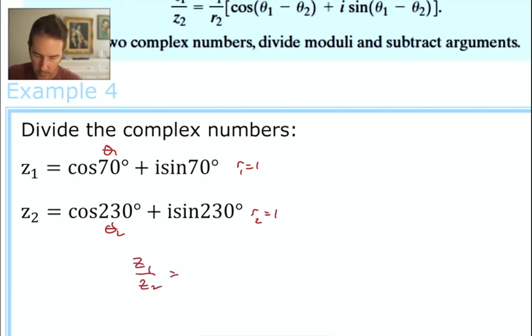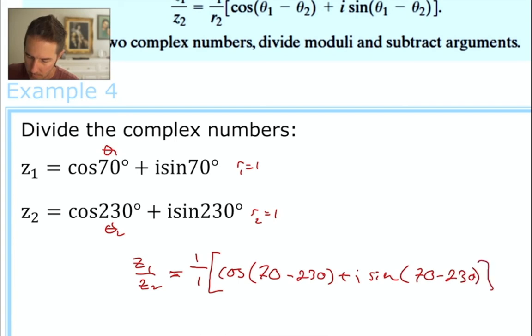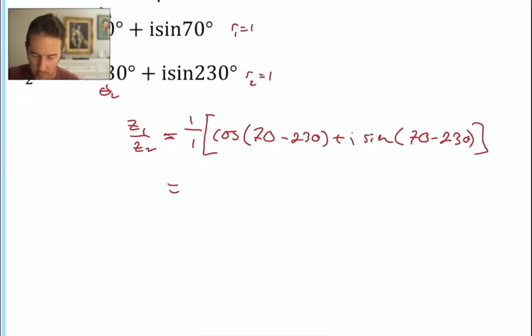z1 over z2 is equal to r1, which is 1, divided by r2, which is also 1, times the quantity cosine theta 1 is 70 and theta 2 is 230, plus i times the sine of the same stuff. Now we have to do subtraction, which is dangerous. Because I always mess up my subtraction, I stink at arithmetic. So 230 minus 70, let's do it backwards. If I take away 30, it gets me down to 200 and another 40. So that would be 160. So this is negative 160 is the theta value.